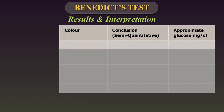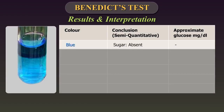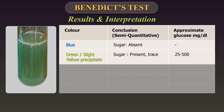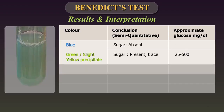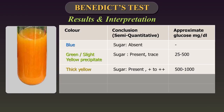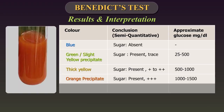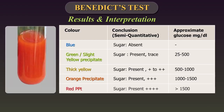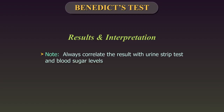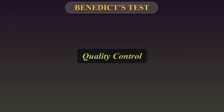Results and interpretation: Blue colour indicates absence of sugar in urine. Green or slight yellow precipitate indicates presence of trace amounts of sugar, approximately 25 to 500 mg per deciliter. Thick yellow colour is graded as plus 1 or plus 2, indicating 500 to 1000 mg per deciliter. An orange precipitate is a plus 3 positive result, indicative of 1000 to 1500 mg per deciliter. A red precipitate is a plus 4 positive result, indicating more than 1500 mg per deciliter of sugars in urine. Always correlate with urine strip test and blood sugar results if available.